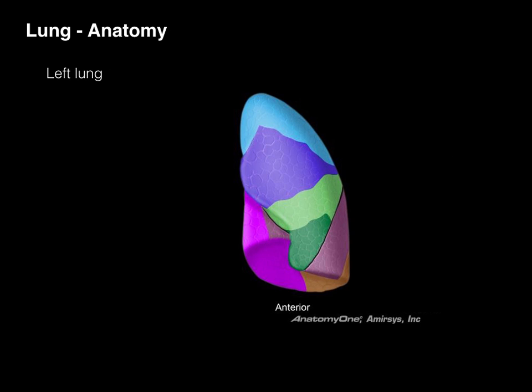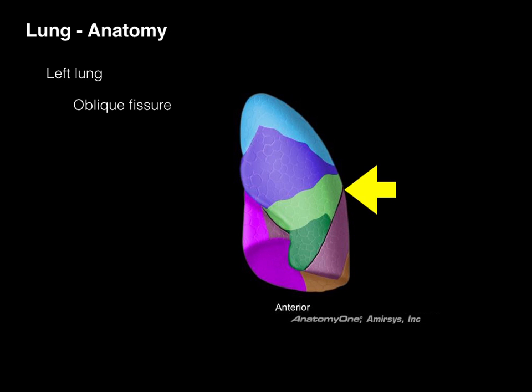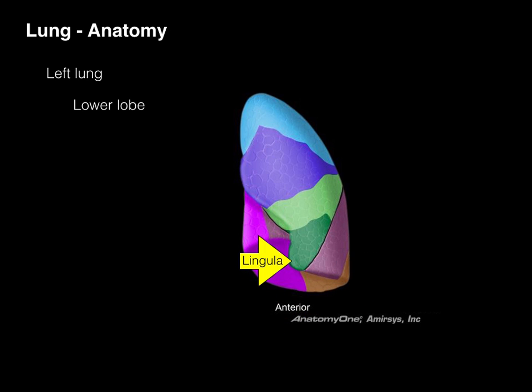The left lung conversely only has two lobes. It has an upper lobe separated by the oblique fissure from the lower lobe. The upper lobe has this cool little thing called the lingula that sticks out. It's a small remnant which would have been the middle lobe of the lung, but because of the development of the heart, no middle lobe formed.